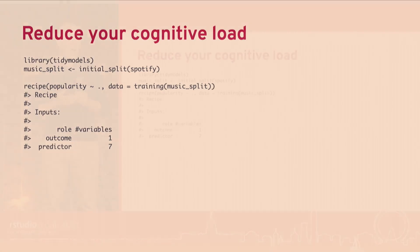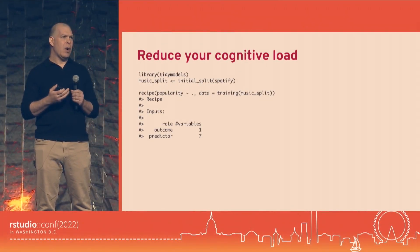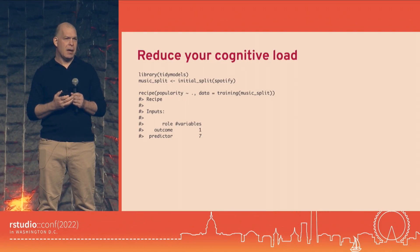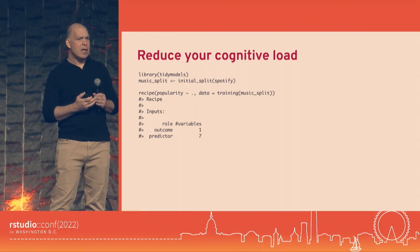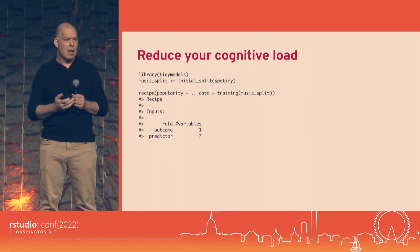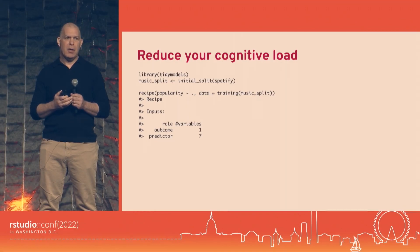In the recipe's first line we start a recipe with a formula — popularity tilde dot. The left-hand side says popularity is an outcome; that's its role in the analysis. The dot means everything else in that data frame is, by default, considered a predictor. Right now, the recipe just catalogs the data — what's in the data frame, whether it's numeric, date, or categorical — and assigns basic roles.